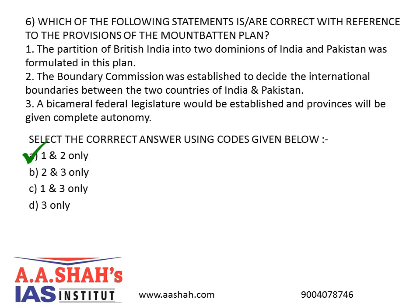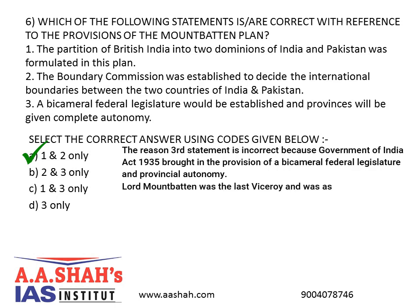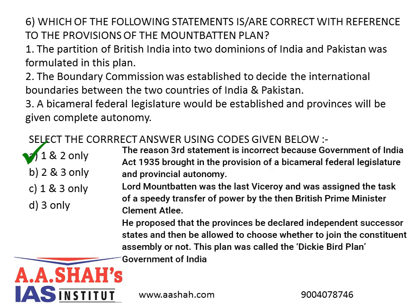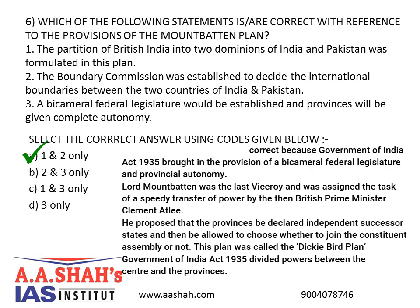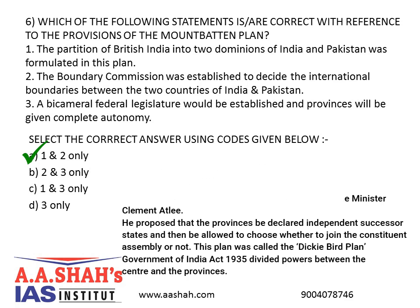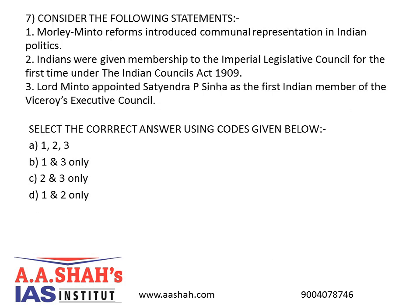Answer: A. The third statement is incorrect because the Government of India Act 1935 brought in the provision of a bicameral federal legislature and provincial autonomy. Lord Mountbatten was the last viceroy, assigned the task of a speedy transfer of power by British Prime Minister Clement Attlee. He proposed that provinces be declared independent successor states and be allowed to choose whether to join the constituent assembly or not — this plan was called the Dickie Bird Plan. Note: Government of India Act 1935 divided powers between the centre and the provinces.